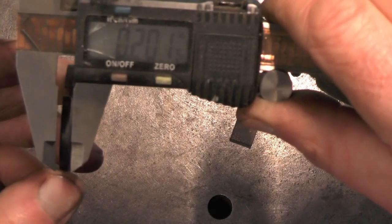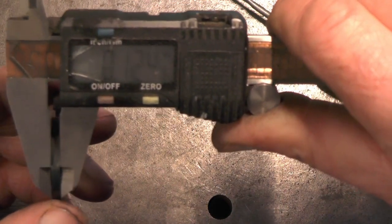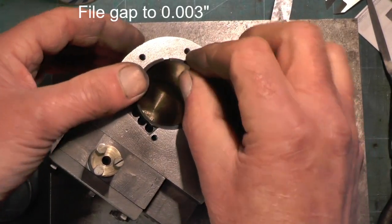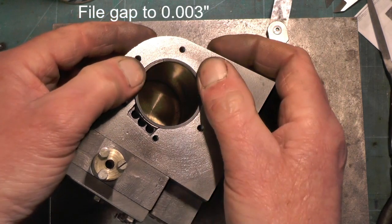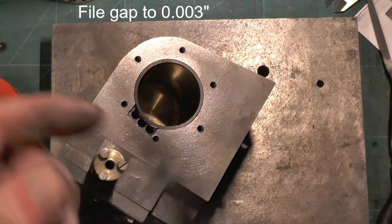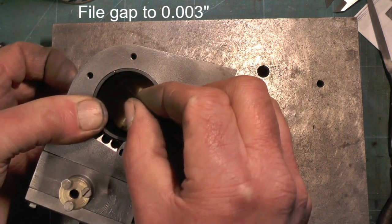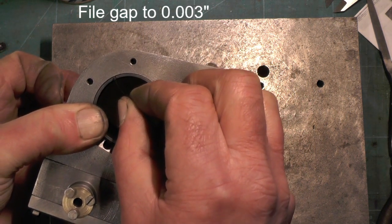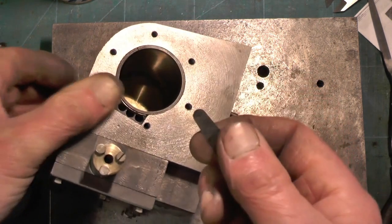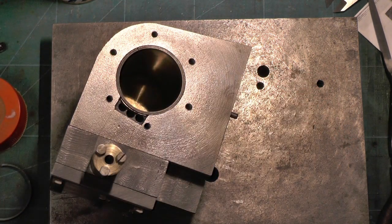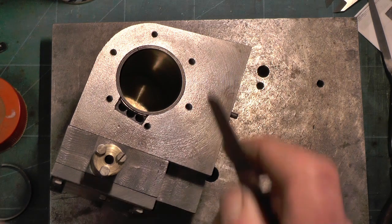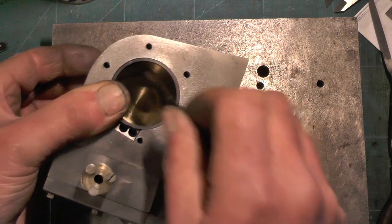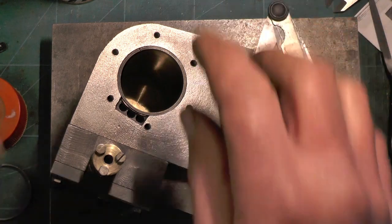I've also sand emery clothed them down to width, 125 thou. Just check, 4 thou, no that won't go in, so that's 3 thou. Right, I'm ready for putting it on the piston now.